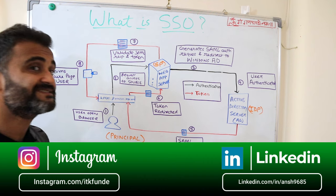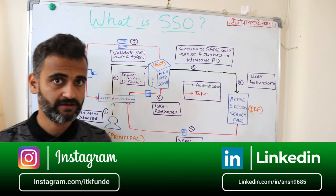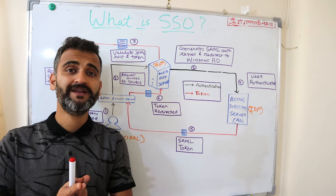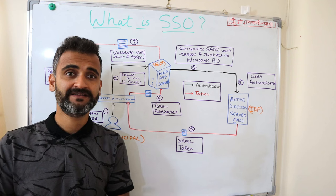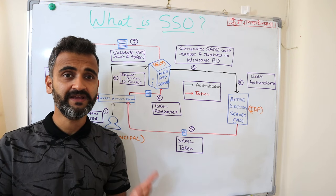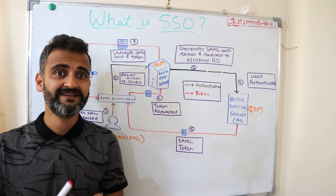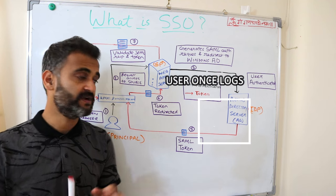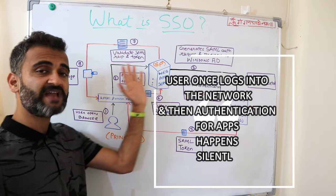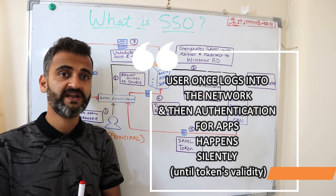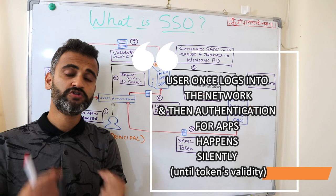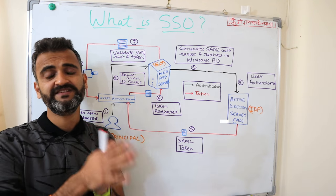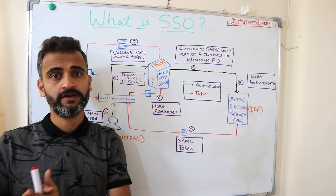There is a second aspect to this, which is silent single sign-on. It is sometimes also called silent SSO. Silent single sign-on means you don't necessarily have to type the password manually — at no point are you typing manual passwords. This is also called SSSO, triple SSO — silent single sign-on.